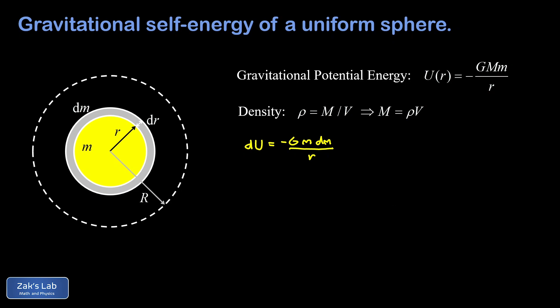Now, ultimately what we want here is an expression entirely in terms of r so that we can integrate as we go from r equals zero to r equals big R. This means we need to rewrite m by using the idea of density, and we need to rewrite dm as well.